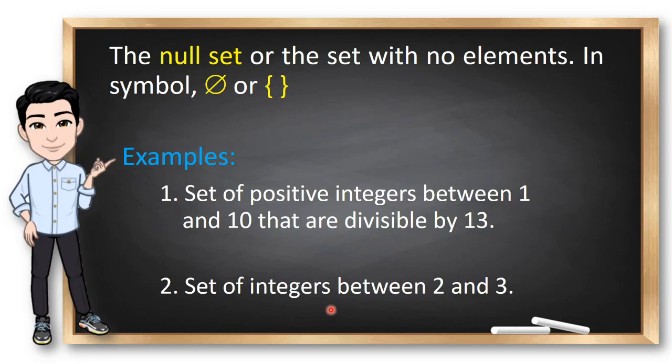Number 2. Set of integers between 2 and 3. Nope. There are no numbers or integers between 2 and 3. Because when we say integers, 2.1 is not an integer. 2.2 is not an integer. 2 and 3 are consecutive positive integers.